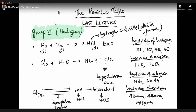Oxides are the binary compounds of oxygen — one oxygen and one other element. Hydrides are binary compounds of hydrogen — one hydrogen and one other element. For example: ammonia is a hydride of nitrogen, HCl is a hydride of chlorine, HF is a hydride of fluorine, H2O is a hydride of oxygen, and CH4 is a hydride of carbon.